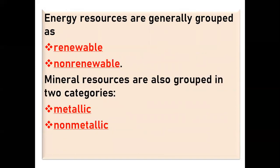Another category is mineral resources, grouped into two: metallic and non-metallic. Metallic mineral resources include gold, silver, tin, copper, lead, zinc, iron, and nickel, while non-metallic resources include sand, gravel, uranium, and dimensional stone.